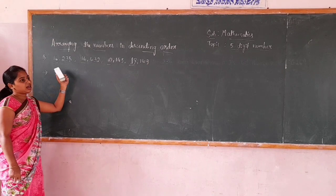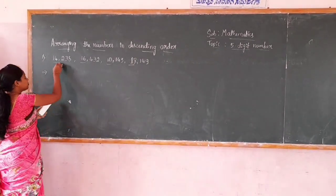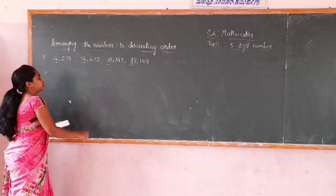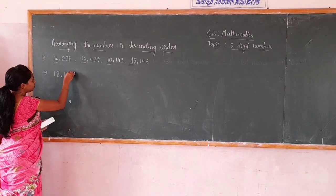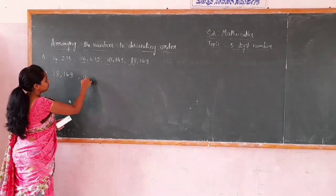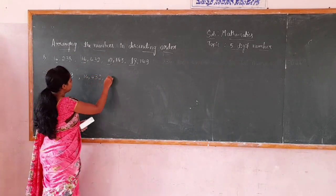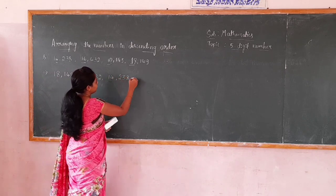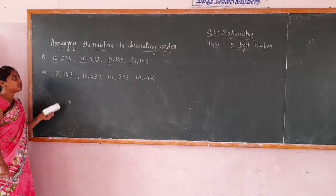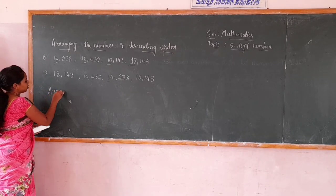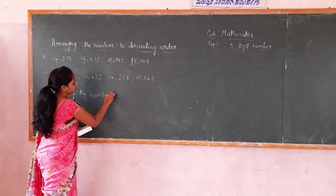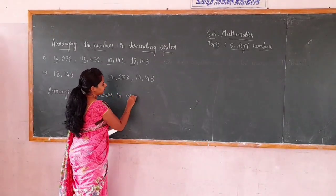We compare the ten-thousands places — all digits are 1, so they are the same. Move to the thousands places: 4, 6, 0, 8. Comparing these, 8 is greatest. So we write 18,149 first. The next is 16,432, then 14,238, then 10,143.